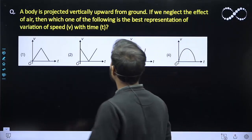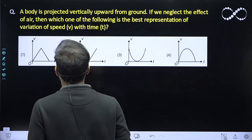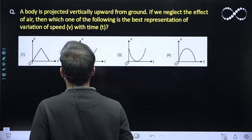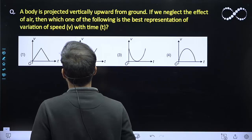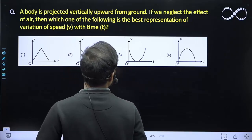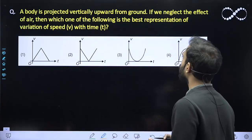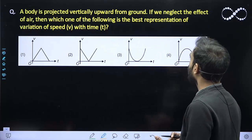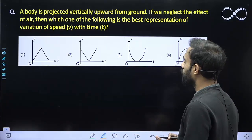So ball is projected vertically upward from the ground and we have to find the relation between velocity and t, v and t. You can see from here, since the body is projected vertically upward from the ground and you have to find the relation between speed and time.